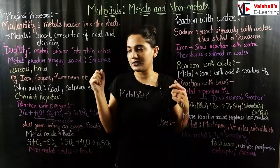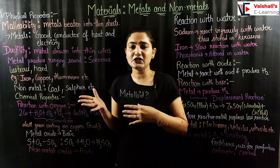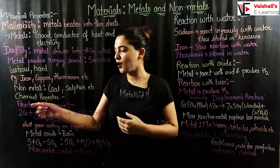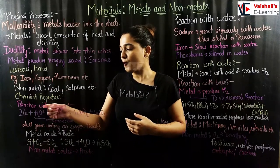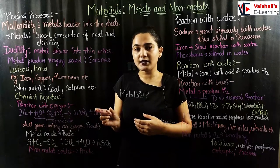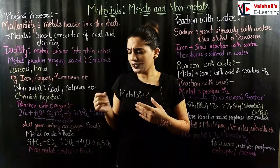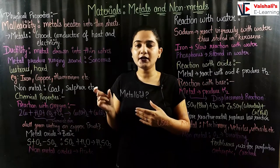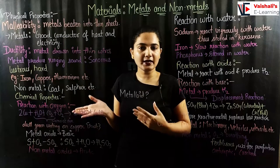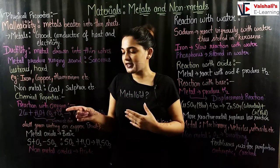Now for chemical properties — the first is the reaction with oxygen. Iron and magnesium react with oxygen and rust in the presence of oxygen and water. Copper reacts with oxygen in the presence of water and carbon dioxide: 2Cu + H₂O + CO₂ + O₂ gives Cu(OH)₂ + CuCO₃. Copper vessels develop a green covering when left in water and air, due to the formation of Cu(OH)₂ and CuCO₃. Similarly, iron rusts when exposed to water and oxygen.